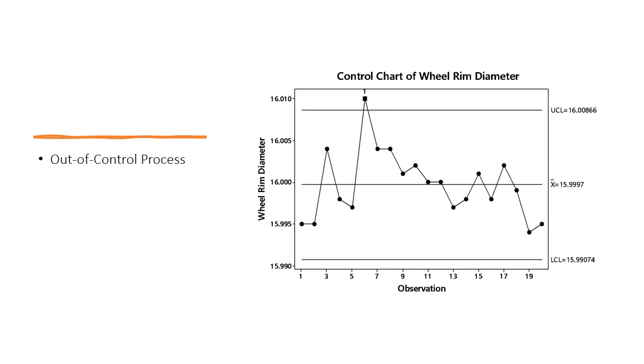An out-of-control process is affected by something unusual, such as equipment problems, an incorrect adjustment, or changes in raw material. This will result in unpredictable variation in the measurement data. We call this assignable cause variation. Assignable cause variation is also called special cause variation.